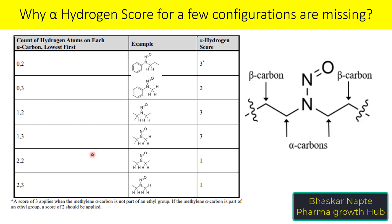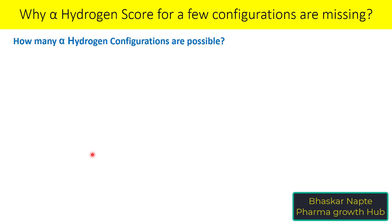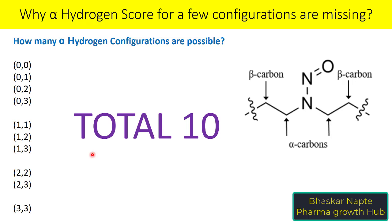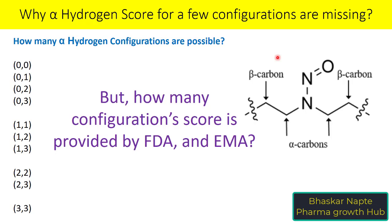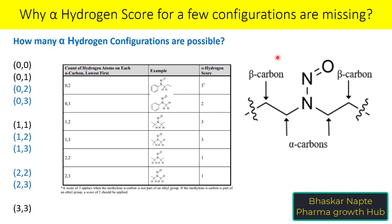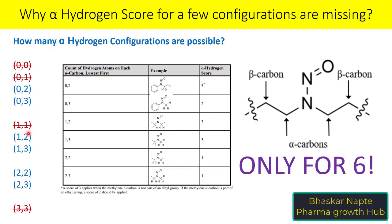Our topic today is about this configuration part. In total, EMA and FDA have given 6 configurations for alpha hydrogen. But in reality, since there are 2 carbons connected to the nitrogen in a nitrosamine, there are 10 possible configurations: 0,0 — absence of alpha hydrogen on both alpha carbons; 0,1 — no hydrogen on one alpha carbon and one hydrogen on the second; and so on up to 3,3. But FDA and EMA have only provided scores for 6 of these, not for 0,0; 0,1; 1,1; and 3,3.